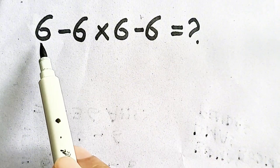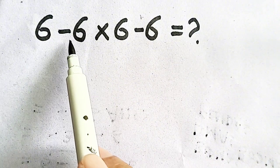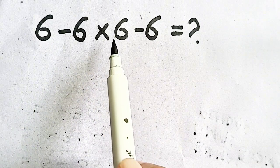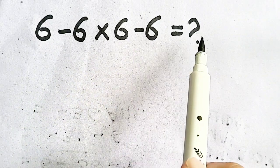Dear students, six minus six is equal to zero, zero multiplied by six is zero, zero minus six equals minus six.